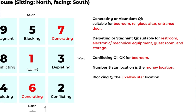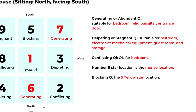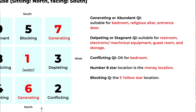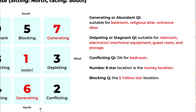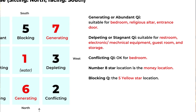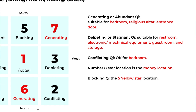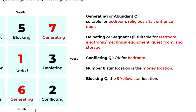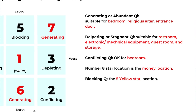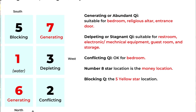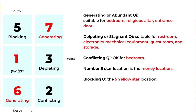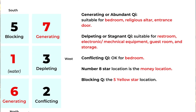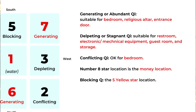The last energy type is blocking Qi, and it's the number five star — the Wu Huang, the five yellow star's location. The energy of the five yellow is more like a blockage or obstacle. Even though the five yellow is one of the worst stars in the nine flying stars, it's not always so negative, unless there's a certain year or month that's really conflicting with your energy.